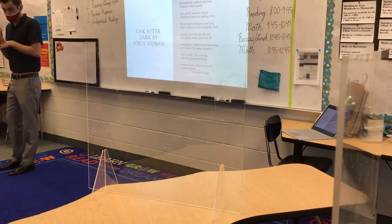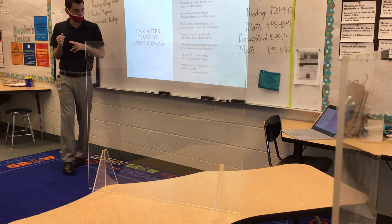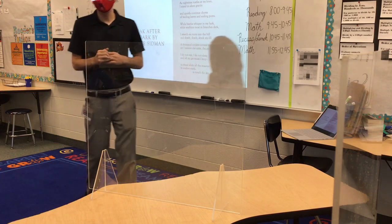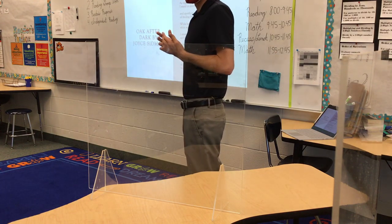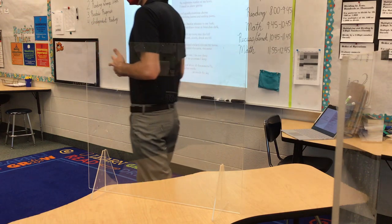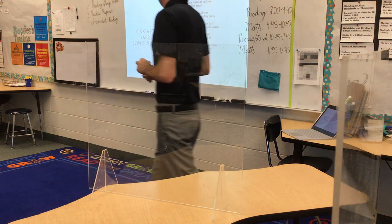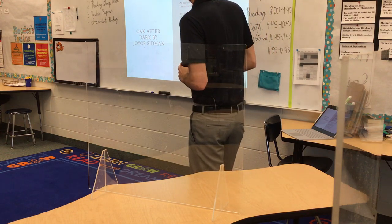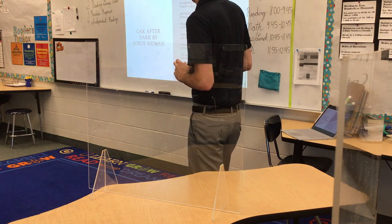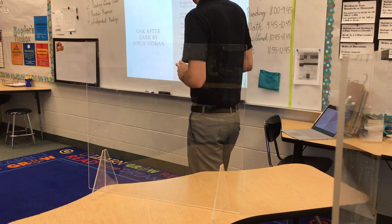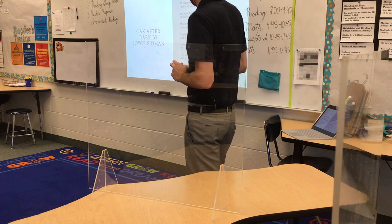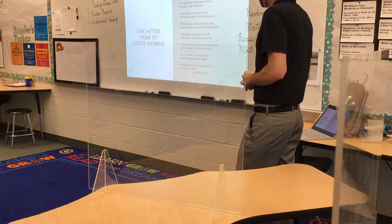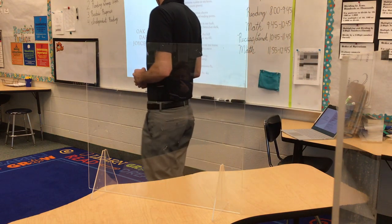So for those of you that just came in, we're reviewing parts of poems — there's white space and there's line breaks, and they affect how you read a poem. Line breaks, you pause kind of like periods — pause slightly. White space, you pause a little bit longer than a line break. I'll attempt to read the poem one last time so you can hear it. As nighttime rustles at my knee, I stand in silent gravity. And quietly continue chores of feeding leaves and sealing pores. While beetles whisper in my bark, while warblers roost in branches dark. I stretch my roots into the hill and slowly, slowly drink my fill. A thousand crickets scream my name, yet I remain the same, the same. I do not rest, I do not sleep, and all my promises I keep. To stand while all the seasons fly, to anchor earth, to touch the sky.